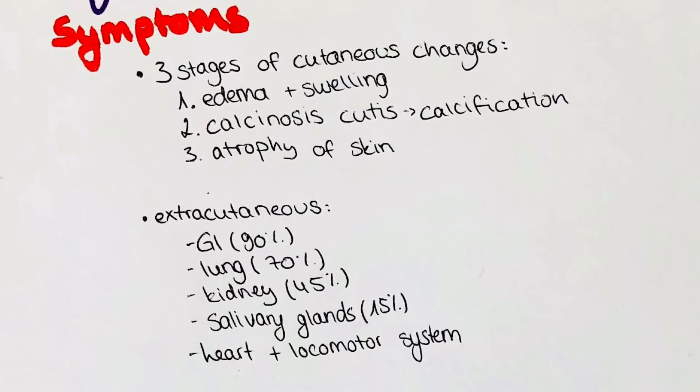Extra-cutaneous symptoms affect the different organ systems. As many as 90% of patients experience intense gastrointestinal symptoms, which are hypomotility of the esophagus, leading in turn to dysphagia and reflux. 70% of patients have pulmonary manifestations, which are usually pulmonary fibrosis, alveolitis, pulmonary hypertension and pain.